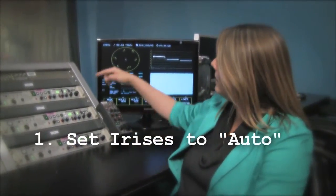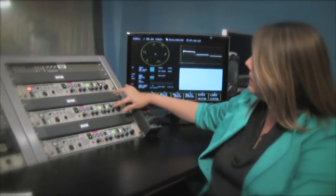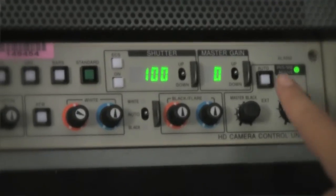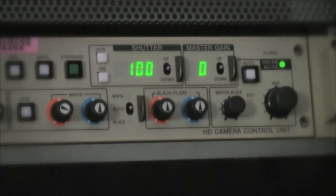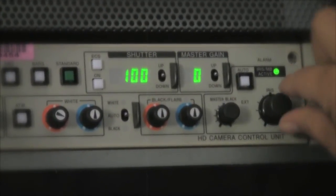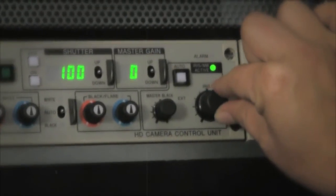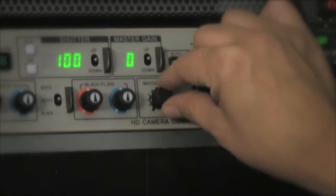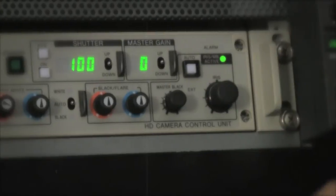So the first thing I'm going to do is make sure that each of my irises is set to auto by pressing the auto button. Now the CCU is automatically going to open up the iris to the proper f-stop for our lighting conditions. When you turn the button off, it's in manual, then you can manually adjust your iris or your master blacks for each camera.